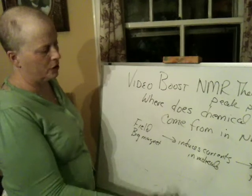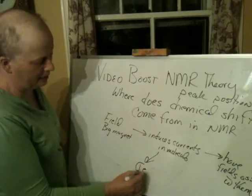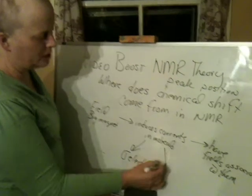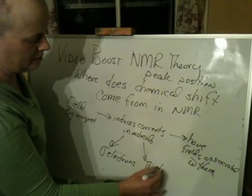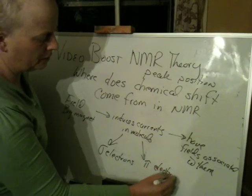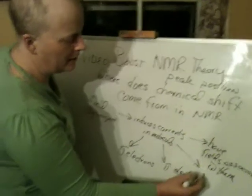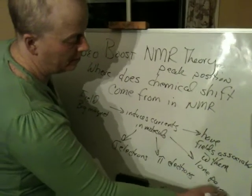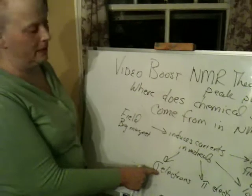Where do these induced currents come from? Really three places. They come from sigma electrons, they come from pi electrons — because these are really the three types we have in molecules — and then they come from lone pairs. I will not talk about lone pairs; lone pairs are actually very complicated. Today I'm just going to talk a little bit about sigma electrons.